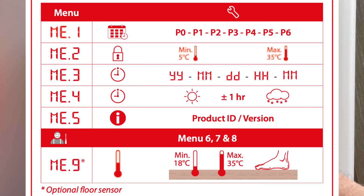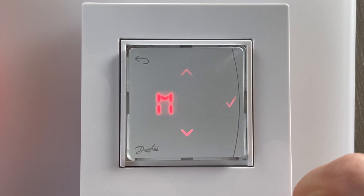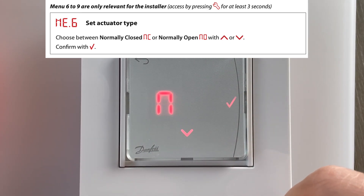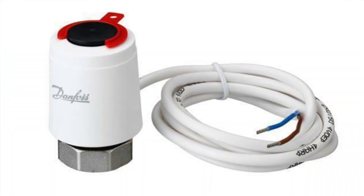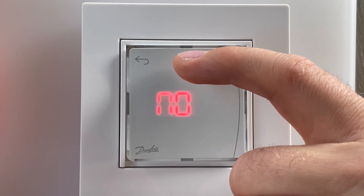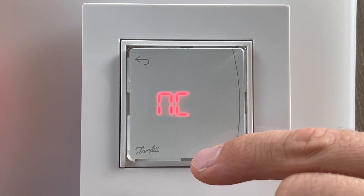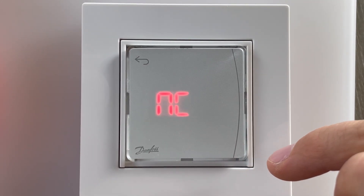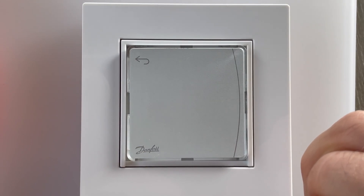You need to push and hold for six seconds to enter the installer advanced menu. Menu 6 was hidden and it is for NC or NO type actuator. When connecting the thermostat, the installer should choose the right type of actuator, which is usually written on the actuator itself. For floor heating, we usually use normally closed actuators.